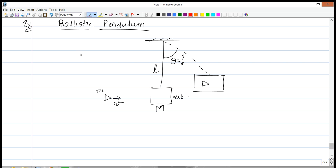You have a bullet of mass m that is moving to the right with speed v. The bullet is going to collide against a block, a large block of mass capital M that is initially at rest. This block is attached by a string to a ceiling. The length of the string is L.